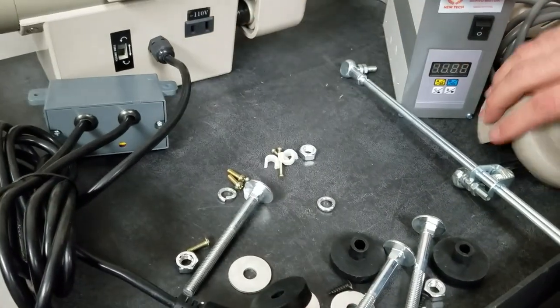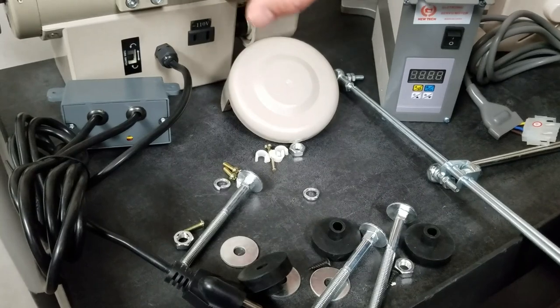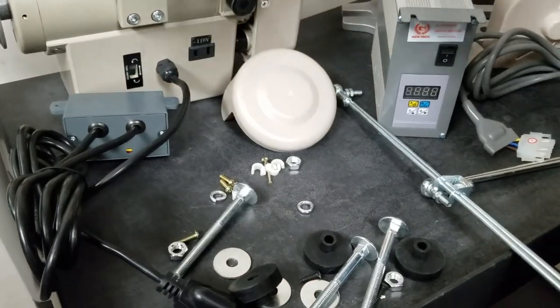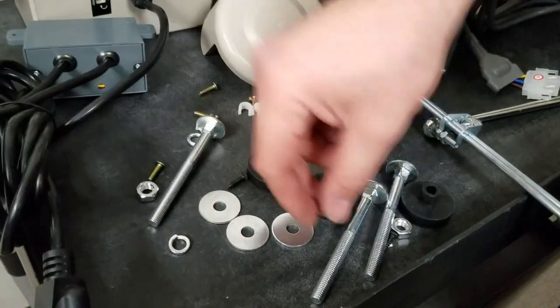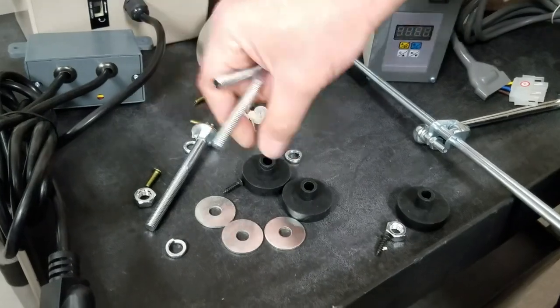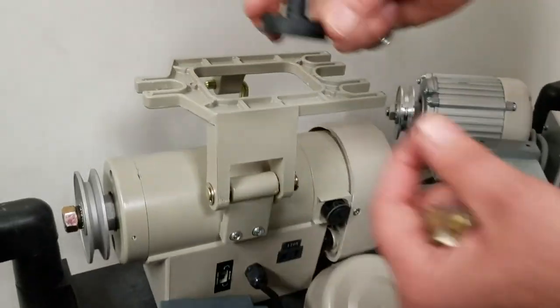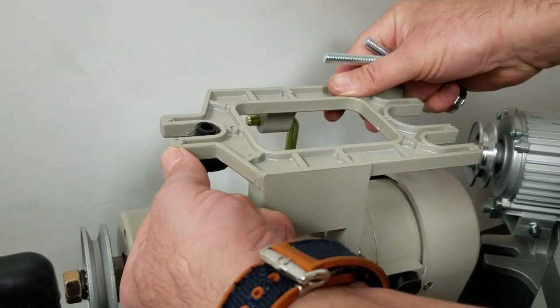You don't get a belt with the machine because different machines need different belt sizes. You get three washers, three screws, three bolts and three nuts, and these are the cushions that go here so the machine will not shake. Very nice, very easy done.